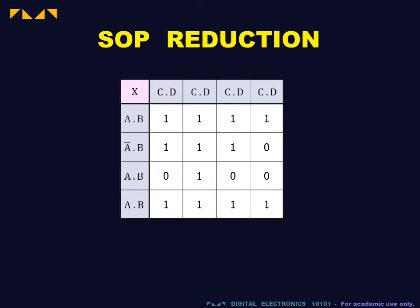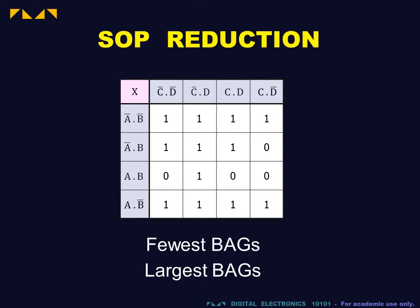For SOP reduction, we want to cover the ones in the map with the fewest bags possible. Furthermore, the larger the bag, the simpler the product term. Thus, we also need to cover the ones with the largest bags possible.